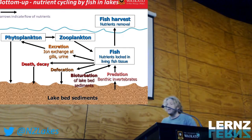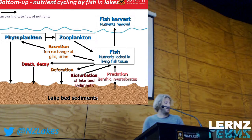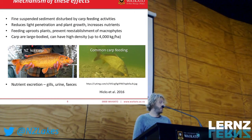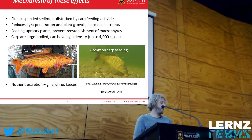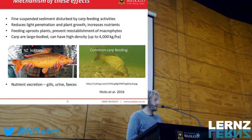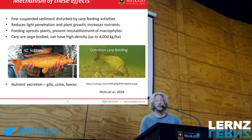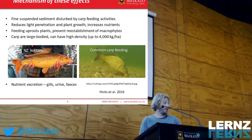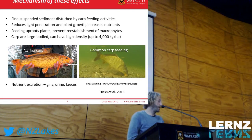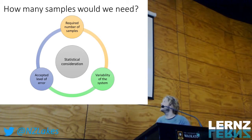Fish in general can account for quite large portions of nutrient loads — fish metabolism, excretion, nutrient recycling. Koi carp can recycle nutrients through excretion and benthic foraging. Here's just a diagram on how these interactions can take place.